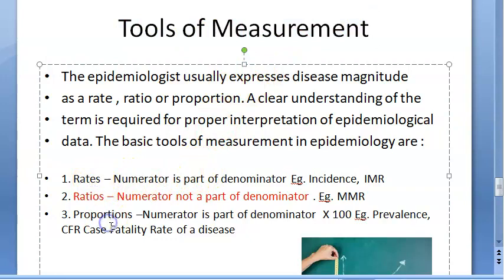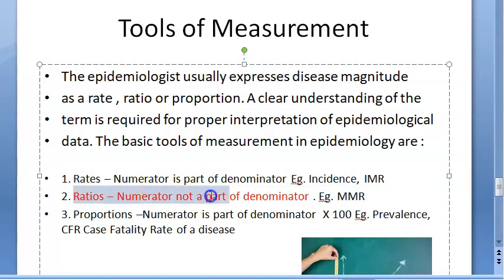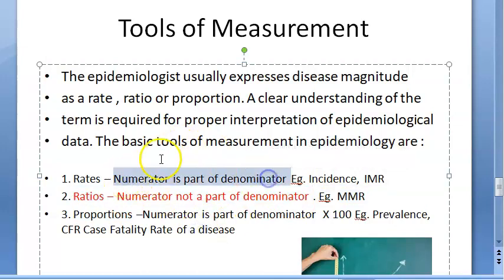So to summarize, the tools of measurement in epidemiology are rate, ratio, and proportion. Only the ratio is special — the numerator is not a part of the denominator. In everything else, rate and proportion, the numerator is a part of the denominator.